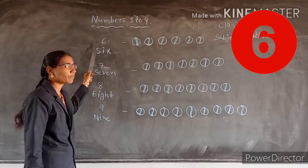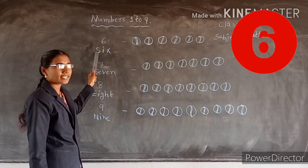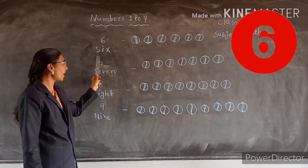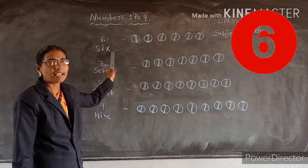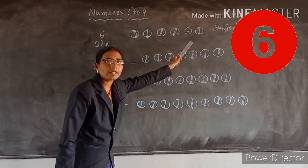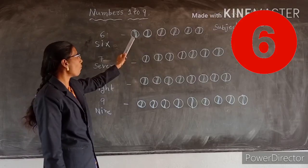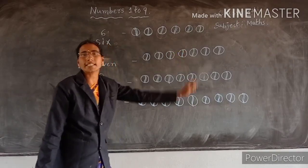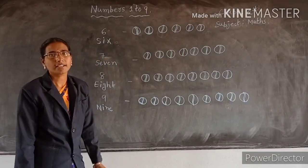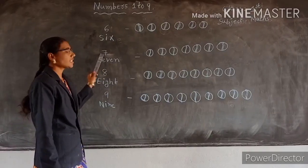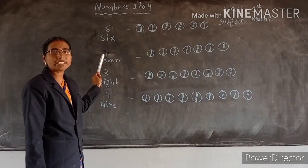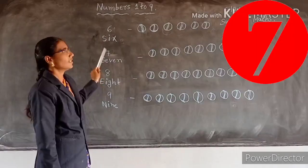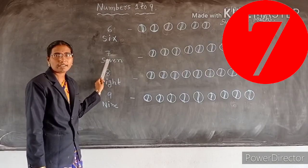How many parts are there? Count, children. 1, 2, 3. 6. What is this spelling? 4, 5, 6. How many parts are there? 6. What is this number? Tell me, children. Very good. 7. 6 after number? 7.